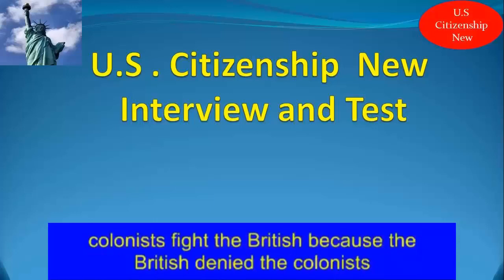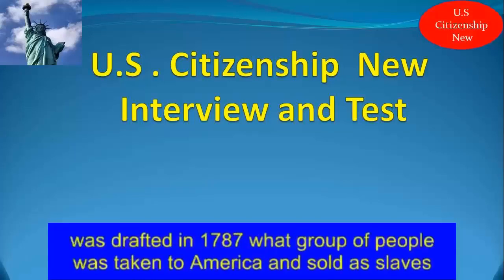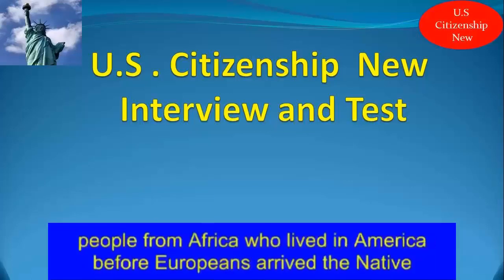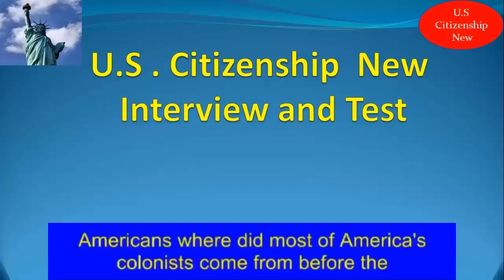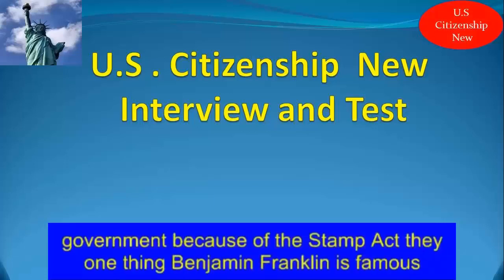Why did colonists fight the British? Because the British denied the colonists self-government. When was the Constitution drafted? The Constitution was drafted in 1787. What group of people was taken to America and sold as slaves? People from Africa. Who lived in America before Europeans arrived? The Native Americans. Where did most of America's colonists come from before the Revolution? They came from Europe. Why were the colonists upset with the British government? Because of the Stamp Act.